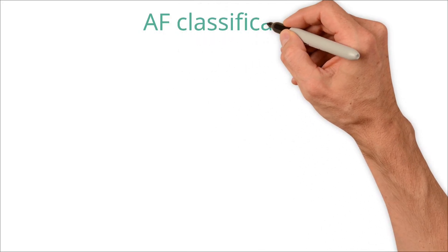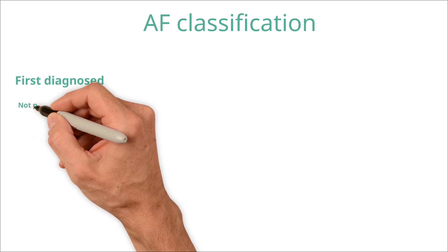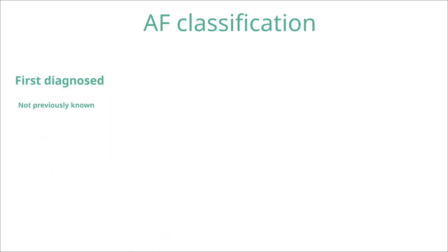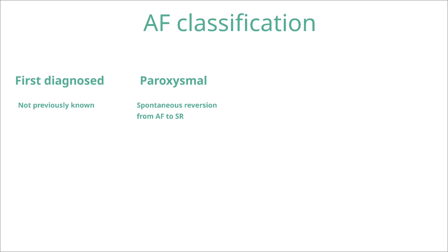We generally classify AF based on how it is presenting in the patient in front of us. First diagnosed AF is where AF is detected newly in a patient not previously known to have AF, regardless of how long they are thought to have had it. Paroxysmal AF is where a patient spontaneously reverts between AF and sinus rhythm without intervention — by definition, they spend less than seven days in AF at a time, but usually episodes last a few hours to a few days.